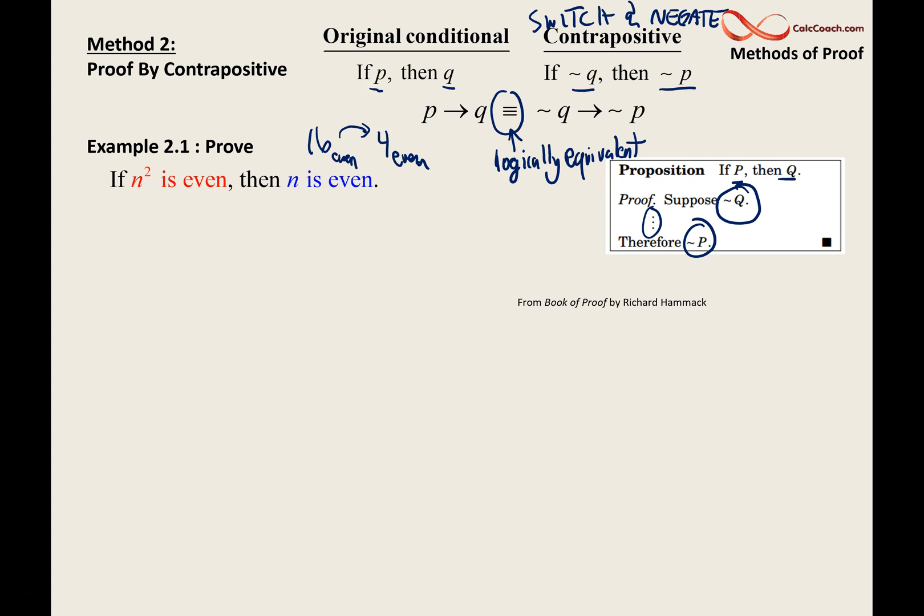To prove it, we are going to do the contrapositive. Switch them and negate them with the opposite of even being odd. We say then by contrapositive: if n is odd, then n squared is odd.